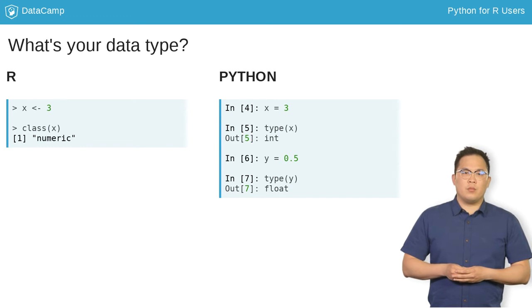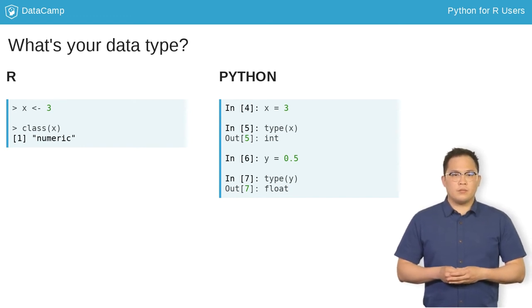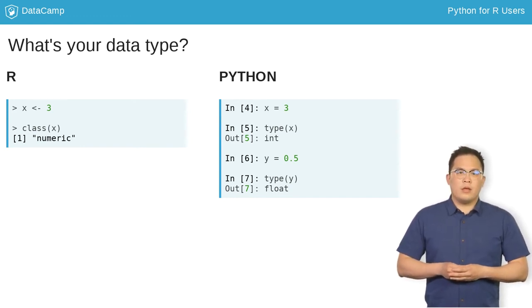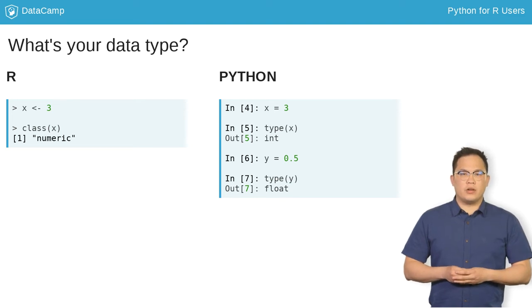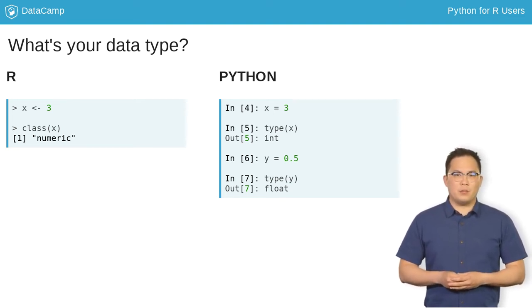It's important to know the data type of the object you're working with. In R, this is done with the class function. In Python, the type function returns the type of the object.